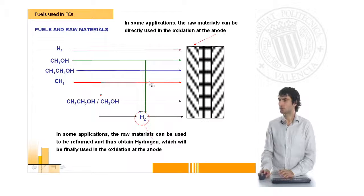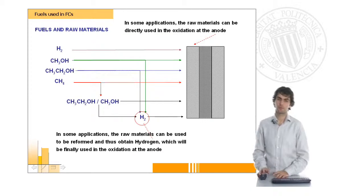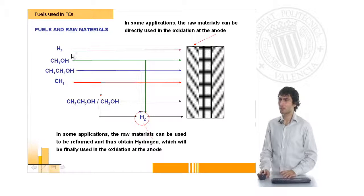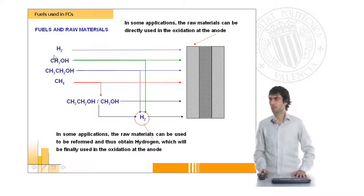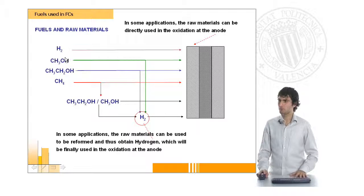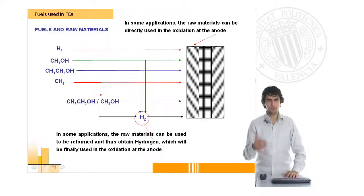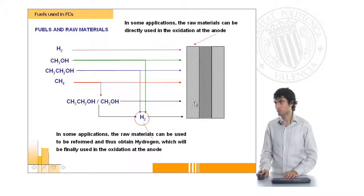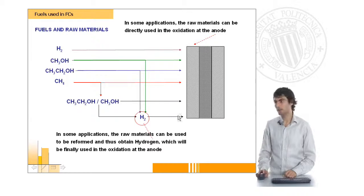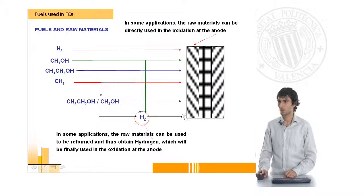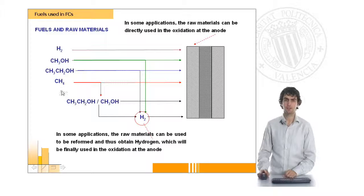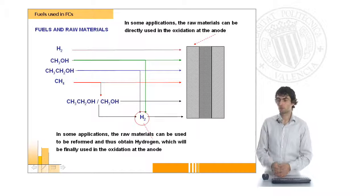We try to draw here a scheme of how we can use different fuels in fuel cells. As I said before, hydrogen can be used directly, must be very clean in some applications, but we can use other components like natural gas, ethanol, or methanol. But if we don't want to use them directly in the anode, we can first reform it to form some hydrogen and then use this hydrogen in the anode. Or we could even use natural gas to form the alcohols and then use them in the anode. There are a lot of possibilities that we can use if we want to combine different fuels.